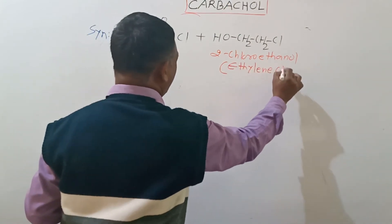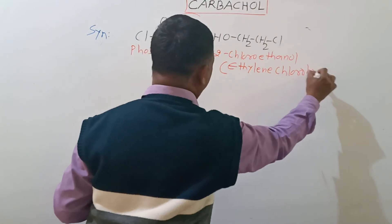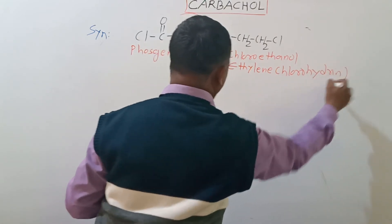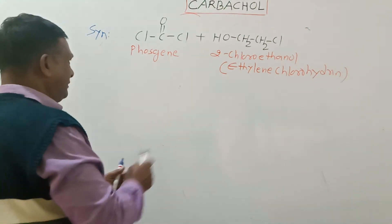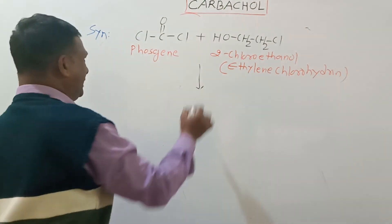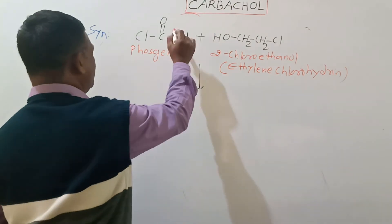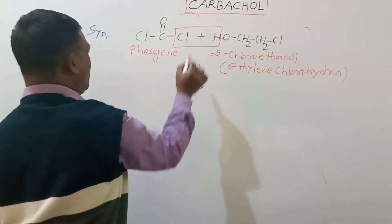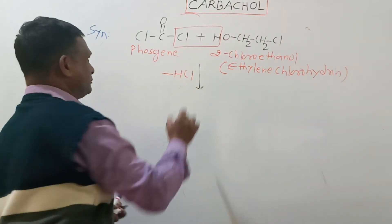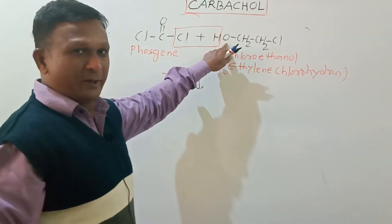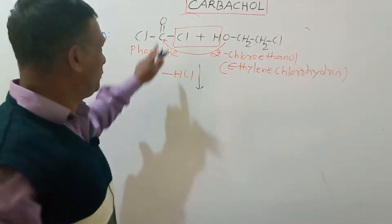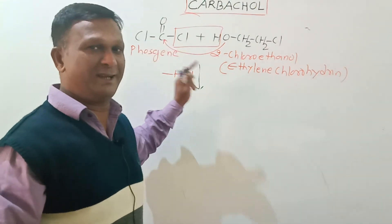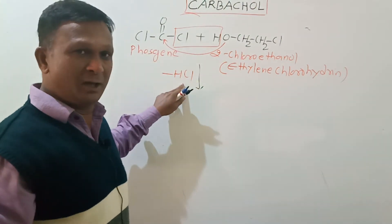The reaction takes place in such a way that there is release of this HCl molecule from here. This hydroxy group attacks on this carbonyl group to bring about the nucleophilic acyl substitution reaction to release out one molecule of HCl.